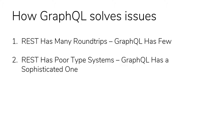REST has poor type systems; GraphQL has a sophisticated one. While REST can have a type system through implementations of HTTP, REST itself does not have a very sophisticated typing system. Even in good implementations, you often end up with variants of type settings. GraphQL solves this with a very sophisticated typing system, allowing for more specific and powerful queries.